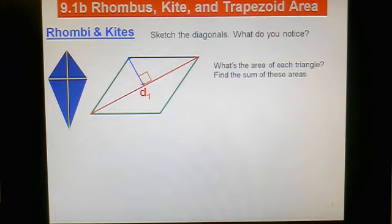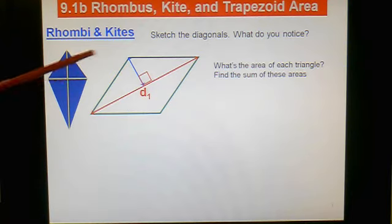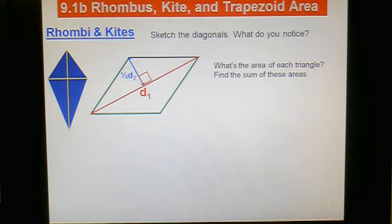So I want you to label one of the diagonals D1. In this case I chose the longer one to be D1. This is not all of diagonal two. This is only half of D2, so I'm going to call that one half D2, one half of diagonal two.